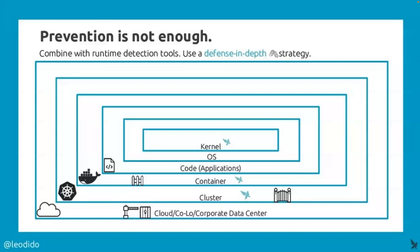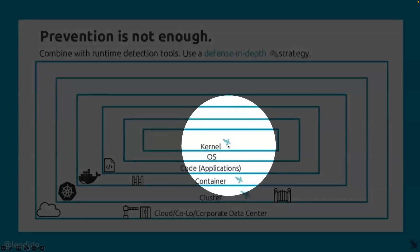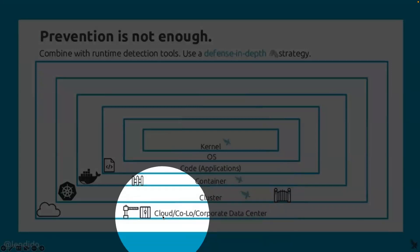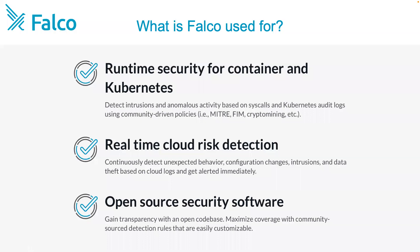Falco is a runtime detection tool. Think about all the enterprise customers — they have all different tools to secure their environment, but prevention is not enough. That's where Falco operates as a runtime detection tool. Falco operates at the kernel level and also at the user space level. In short, it focuses on container security and also Kubernetes cluster security. And with plugins, it also provides cloud-level security. So in summary: runtime security for your containers and Kubernetes cluster, real-time cloud risk detection, and it's open source security software, so transparency is definitely not a problem.